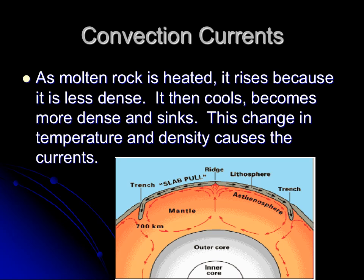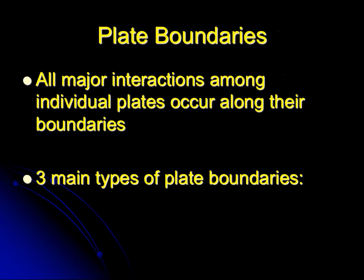The same thing happens with the molten rock inside the earth. It actually rises and sinks, causing currents, which causes movement, which results in plate motion. The diagram shows the orange molten part — not quite liquid but not quite solid — and as it's heated it rises because it's less dense. As it gets up toward the crust it cools, becomes more dense, and sinks, and this change in temperature and density causes the current.